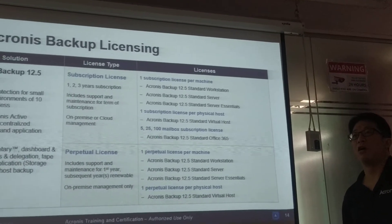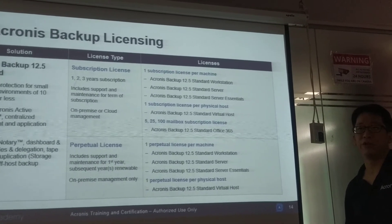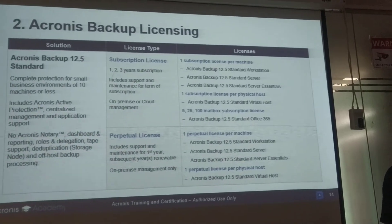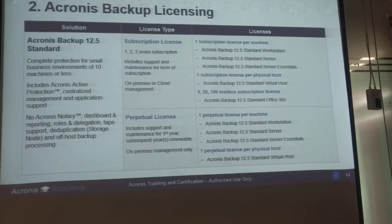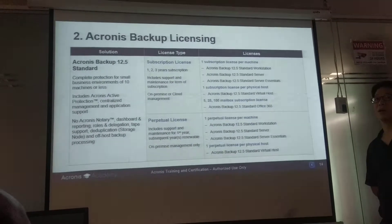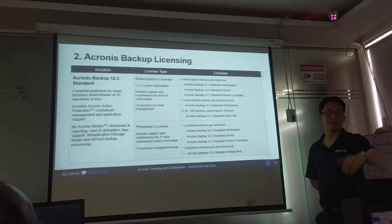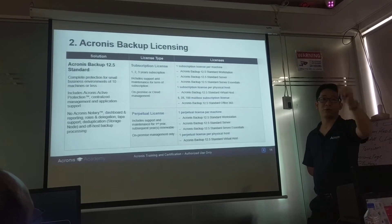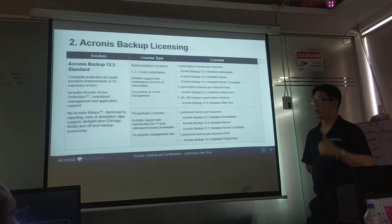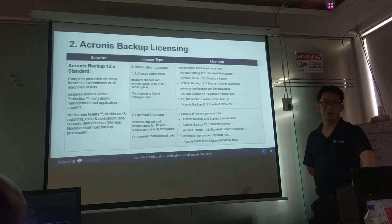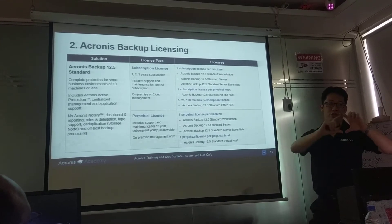Any number of virtual machines on the host is covered. Some software will charge you differently if you back up more than 20 VMs. With Acronis, any number of virtual machines and any number of backups are included, because some other software charges based on the amount of backups or storage — for example, one terabyte pays one rate, more pays more. With us, there are no restrictions on virtual CPUs, number of virtual machines, or amount of storage. Just one license per physical server used for virtualization.